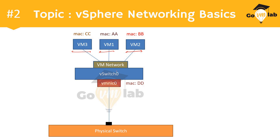These three virtual machines are connected to your virtual switch zero, and there is a port group named VM network port group created on that virtual switch to which VM1, VM2, and VM3 are connected. We also have uplink connectivity via VMNIC0, which is connected to your physical switch port. That is one very basic scenario of vSphere networking.